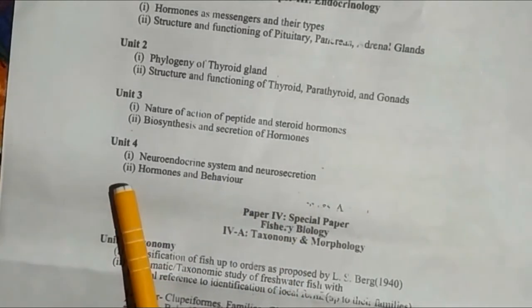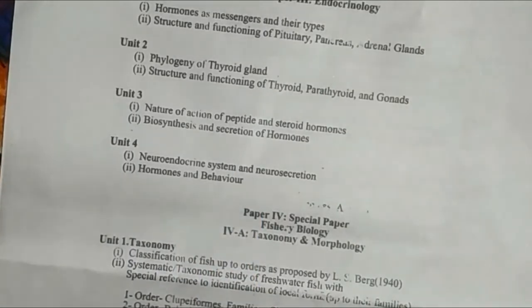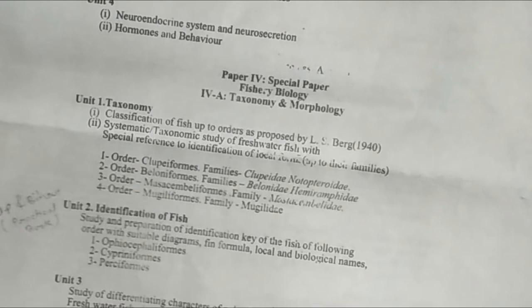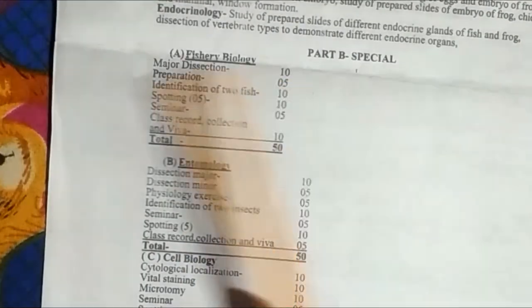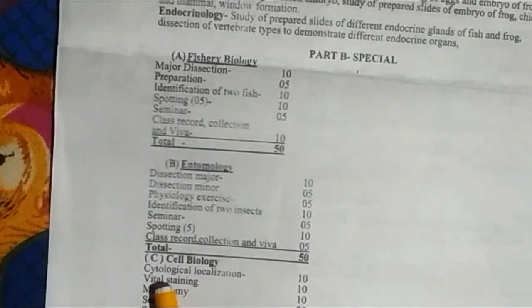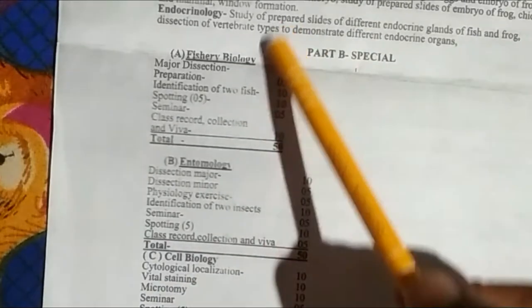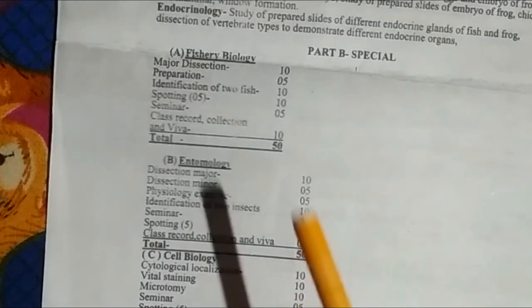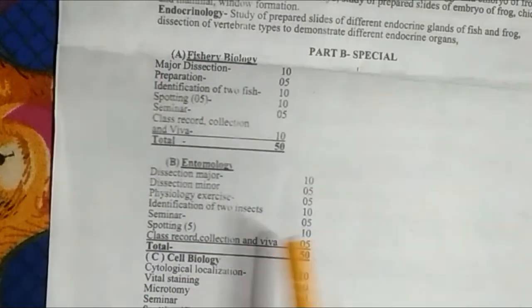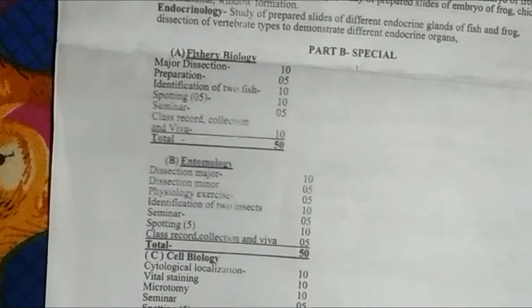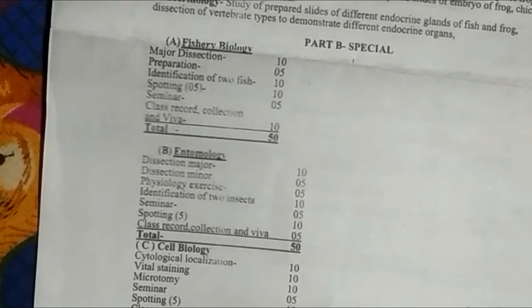In the third semester we also have to select one optional paper. Paper Fourth is optional, and there are three options: Fishery Biology, Entomology, and Cell Biology. You have to select only one of these as your fourth paper.